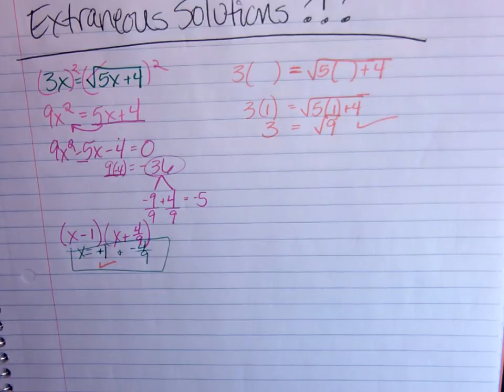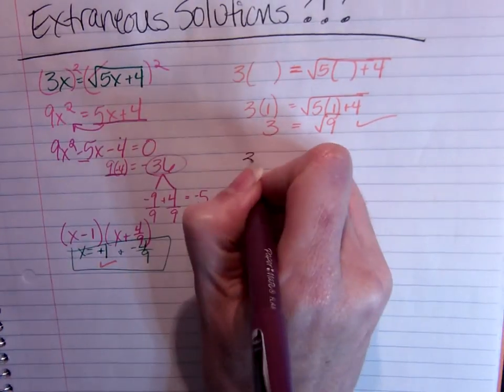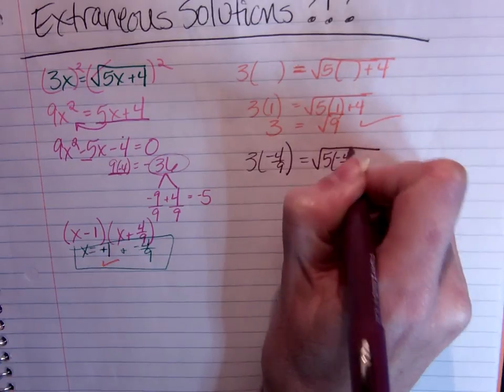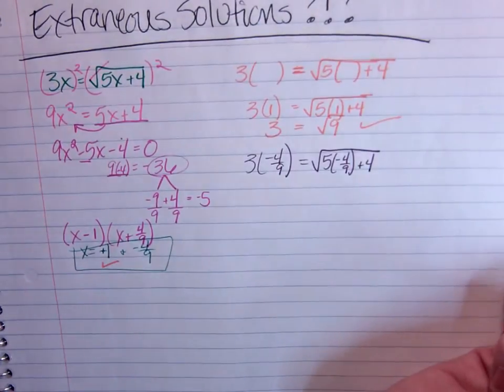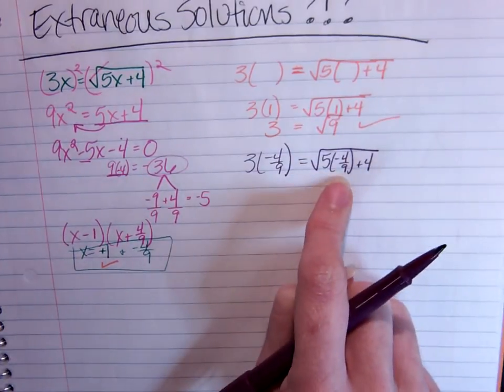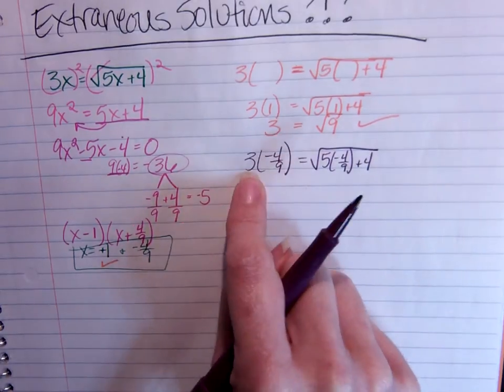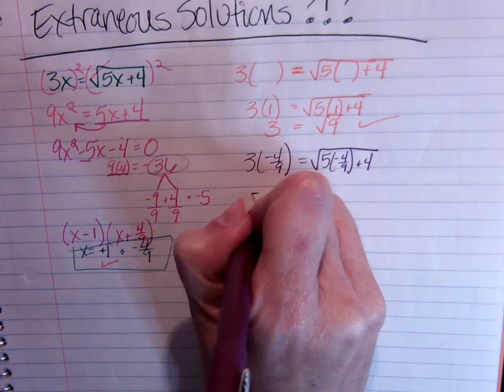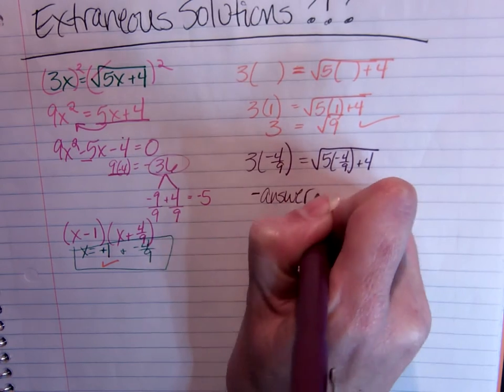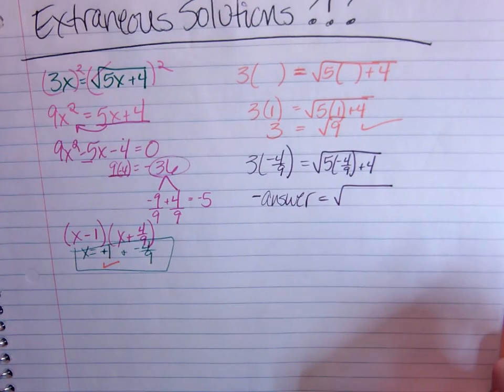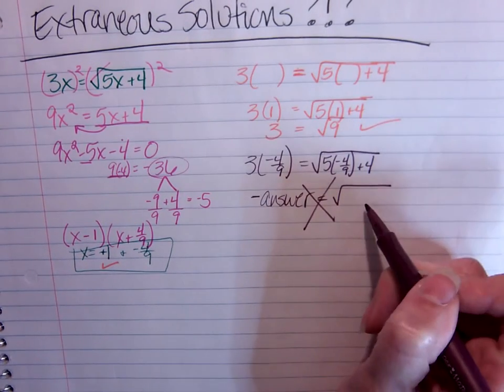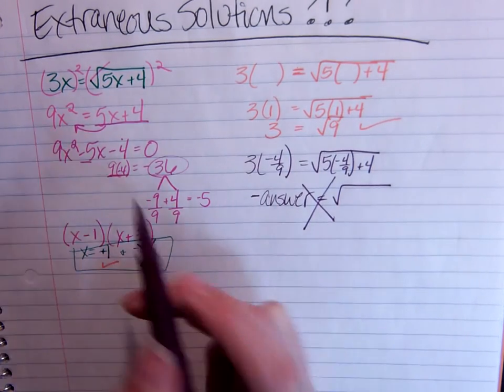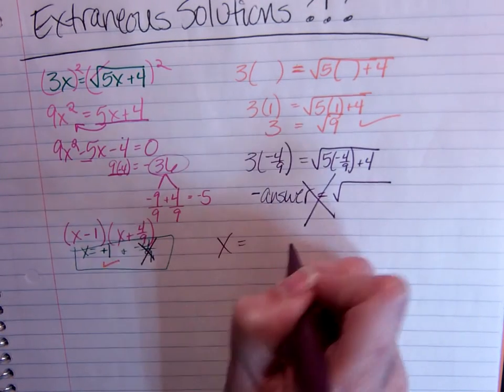So let's check the negative 4 ninths. If I plug negative 4 ninths in, if I'm not comfortable with fractions, I'm going to have to get my calculator out, figure out if this is even a positive number. But 3 that's positive times negative 4 ninths means this answer over here is negative, equal to the square root of something. And as we figured out the other day, this is not okay. I can't take the square root and assume that the answer is going to be negative, which tells me this negative 4 ninths is not an option. So the only solution we have is when x is equal to that positive 1.